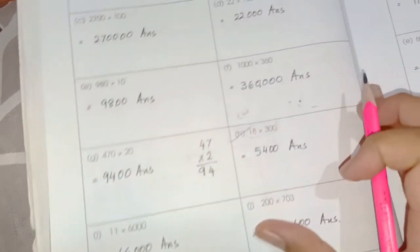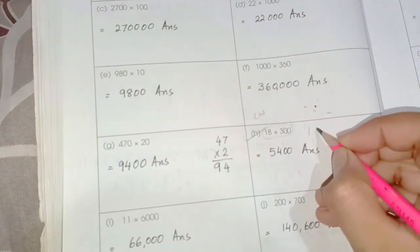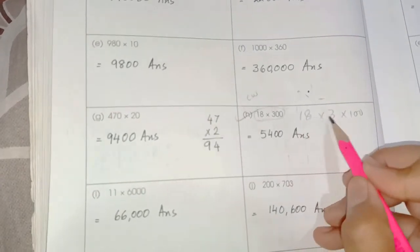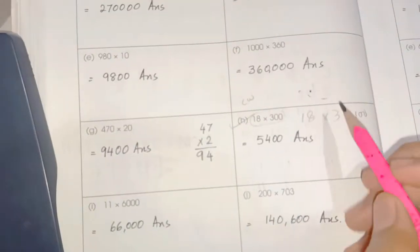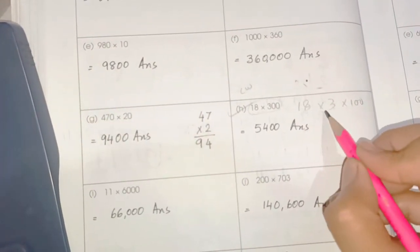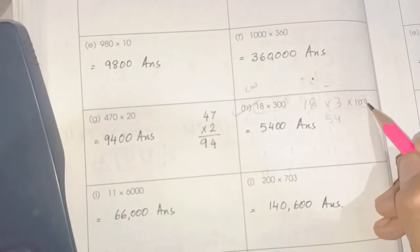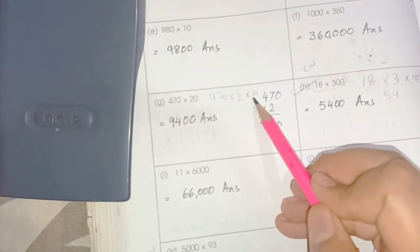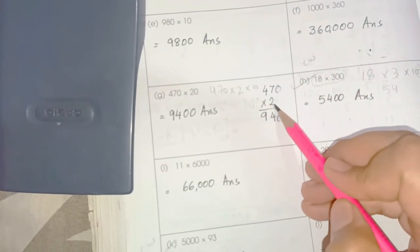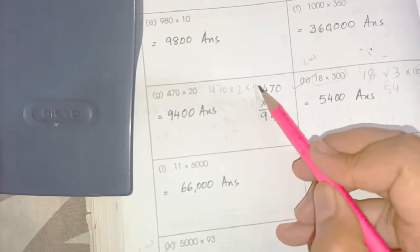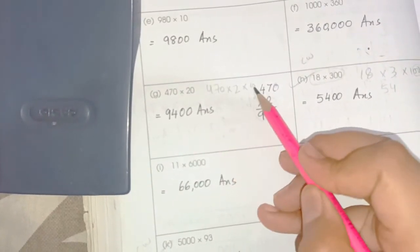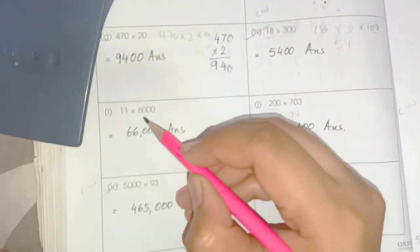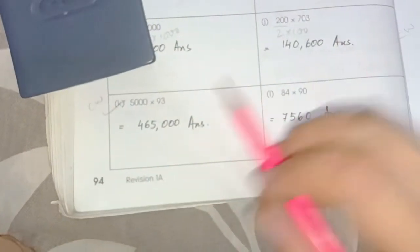Here we have to write the number — for example 18 multiplied by 300. The easiest method is to separate 18 × 3 and then × 100. First multiply 18 by 3: the answer is 54, then add the zeros to get the final answer. Similarly, 470 × 20: multiply 470 by 2 to get 940, then multiply by 10 to get 9,400 — we just add a zero. Also, 200 means 2 × 100, and 6,000 means 6 × 1,000.